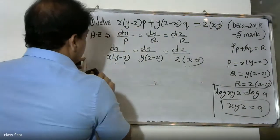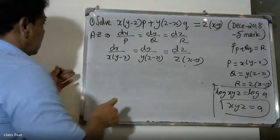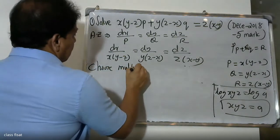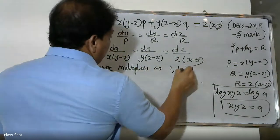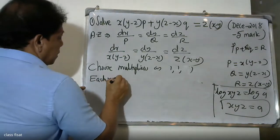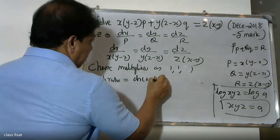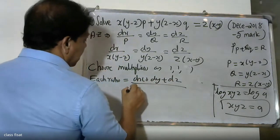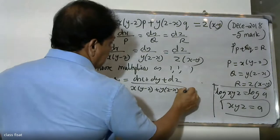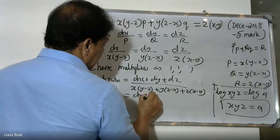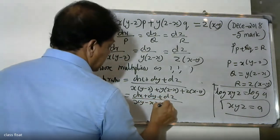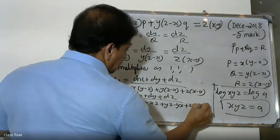Now choose the multipliers as 1, 1, 1. Each ratio equals (dx + dy + dz) divided by x(y-z) + y(z-x) + z(x-y). That is (dx + dy + dz) divided by (xy - xz + yz - yz + zx - zy).